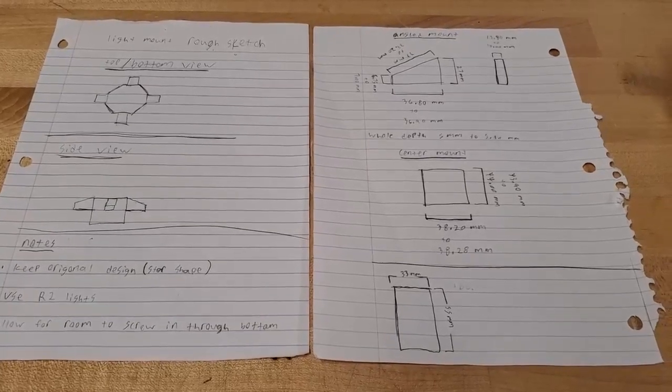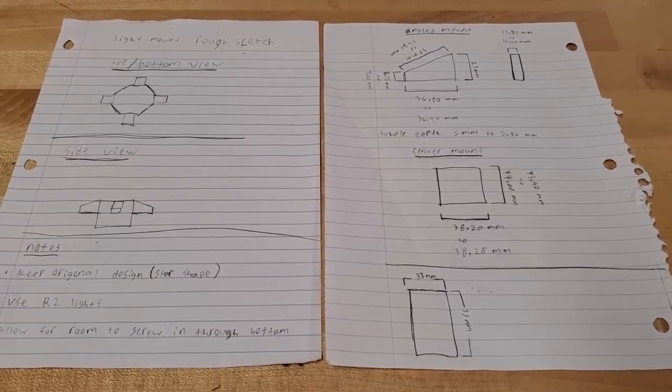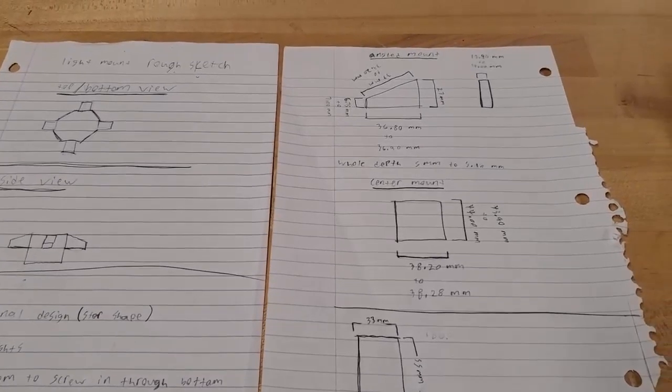The purpose of the lighting system is to provide 360 degree lighting for the cameras. These are the rough sketches for the light mount.